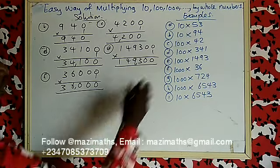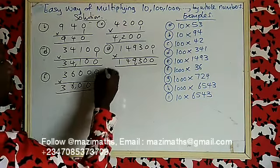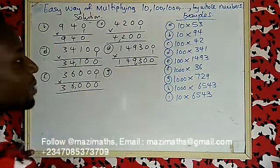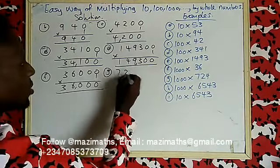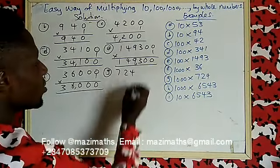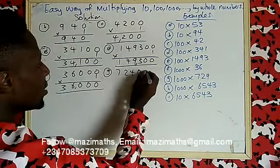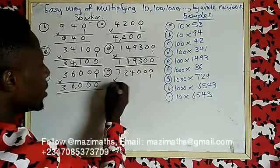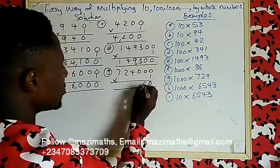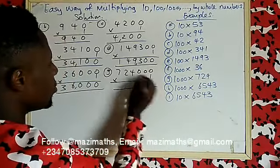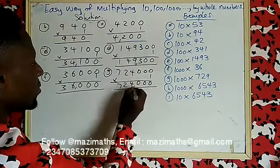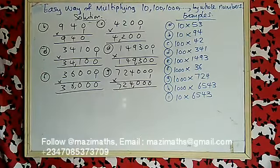Example G: 1000 times 724. First write 724. How many zeros in 1000? Three zeros — one, two, three. Then multiply by one: one times four is four, one times two is two, one times seven is seven. Your answer is 724000.